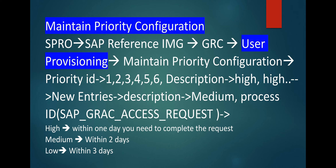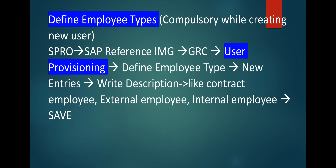Next is maintain priority configuration. Priority ID 1, 2, 6 — description: you can mention High, Medium, Low. In new entries you can select the description. High: within one day you need to complete the request; Medium: within two days; Low: within three days. It depends on your service level agreement according to your project scenario.